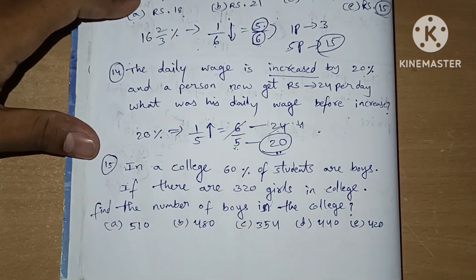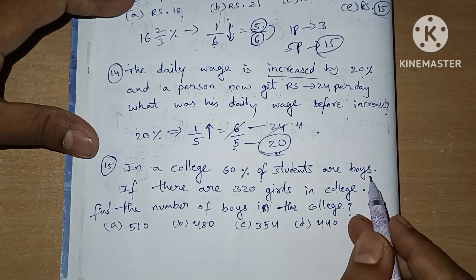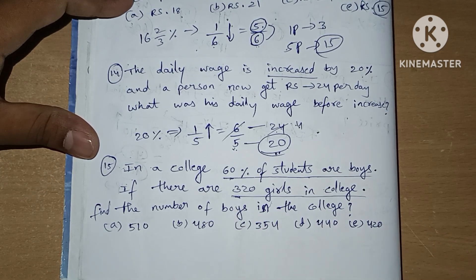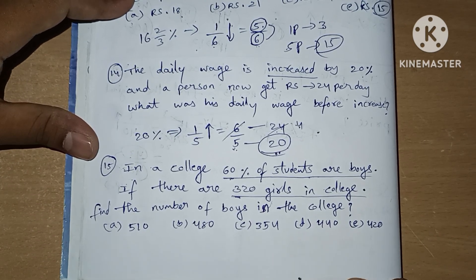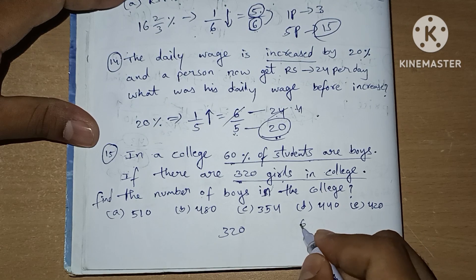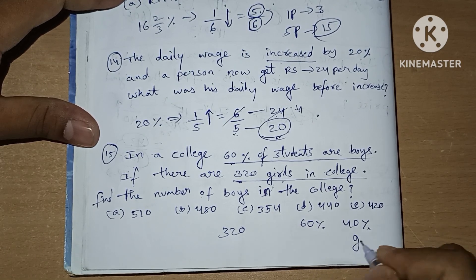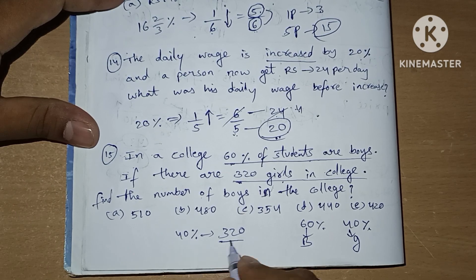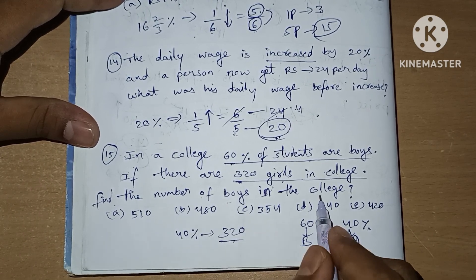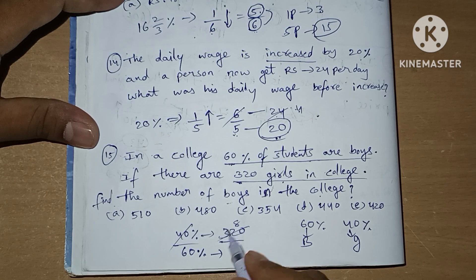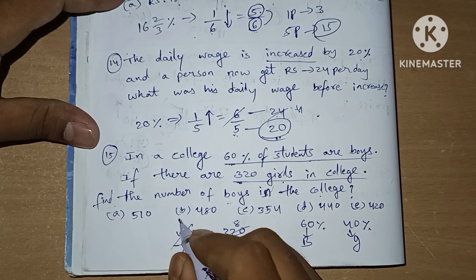Now the last question for this session: In a college, 60% of students are boys. If there are 320 girls, find the number of boys. 60% are boys means 40% are girls. 40% equals 320. We need 60% value: 40 times 8 is 320, and 60 times 8 is 480. So the total number of boys is 480. Option B is our answer.